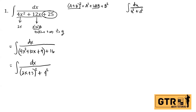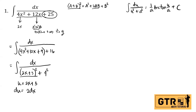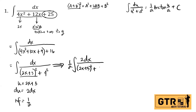We have the direct formula: the integral of du over (u² + a²) = (1/a) arctan(u/a) + C. We let u = 2x + 3, so du = 2 dx. Since the numerator has only dx, we introduce a neutralizing factor of 1/2, giving us (1/2) times the integral of 2 dx over (2x + 3)² + 4².